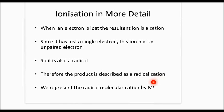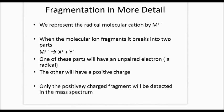Last year we talked about fragmentation, but we didn't represent it with an equation — this is new. We said the radical molecular cation can be represented as M-plus-dot. When we fragment, this M-plus-dot breaks up into two fragments. We're just using X and Y — they're just parts of the molecule, so you don't have to worry about what they actually are.